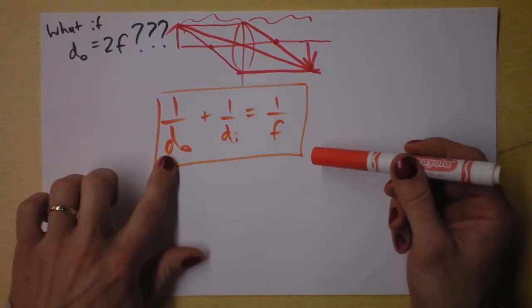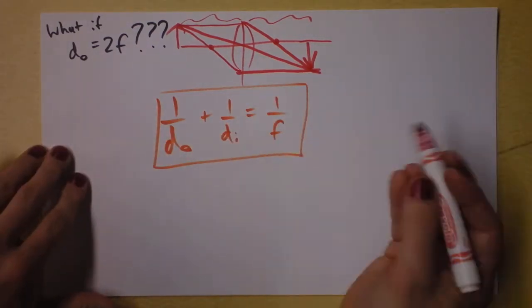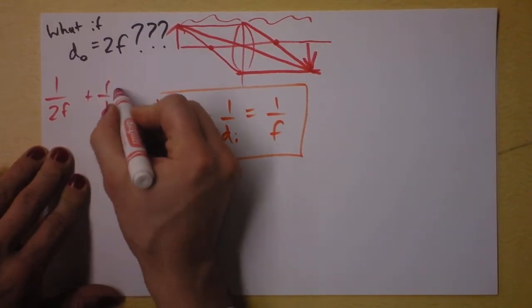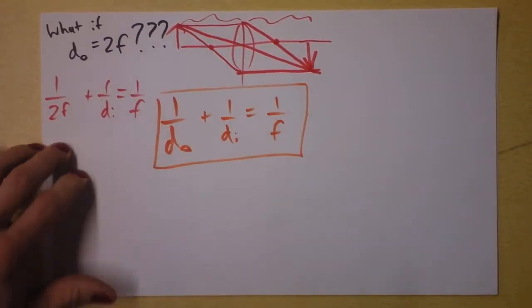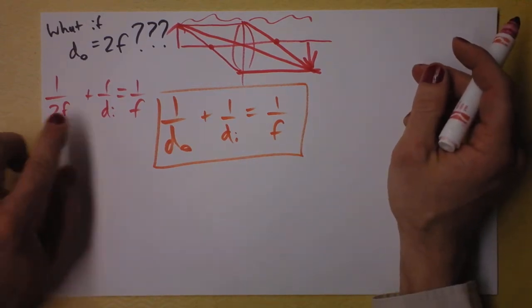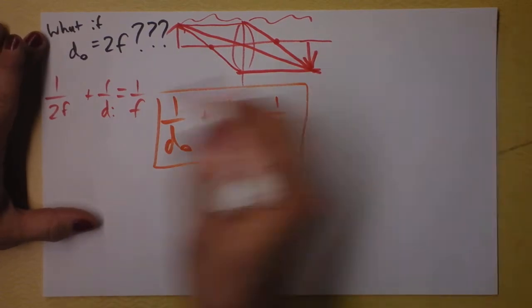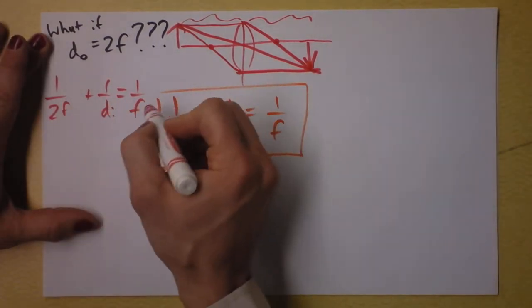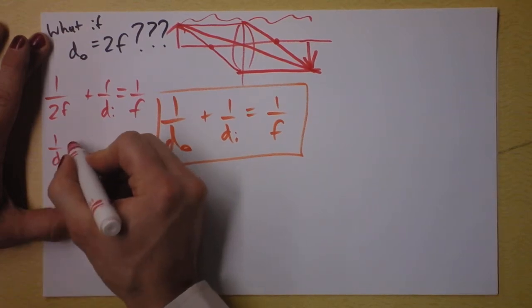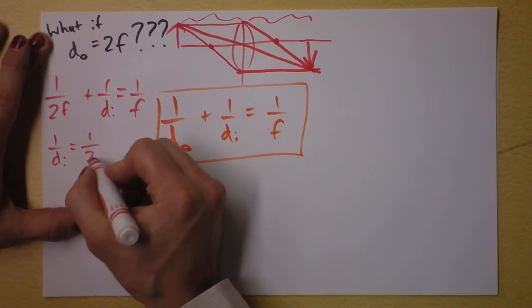So I'll plug in 2f right here and we'll see what happens. We'll do this one entirely in red. 1 over 2f plus 1 over di is 1 over f. Oh shoot. If this is 1 over 2f and this is 1 over f, I suppose we could subtract 1 over 2f from both sides and I'll just get 1 over di is 1 over 2f.